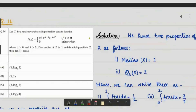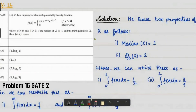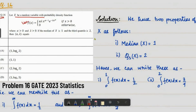Next we go to question number 16. The problem says X is a random variable with a probability density function given, with alpha greater than zero and gamma greater than zero. If the median of X is one and the third quartile is two, we have to find the alpha and gamma pair.